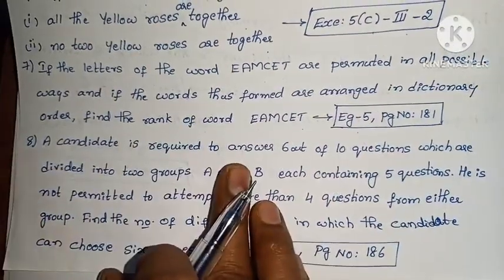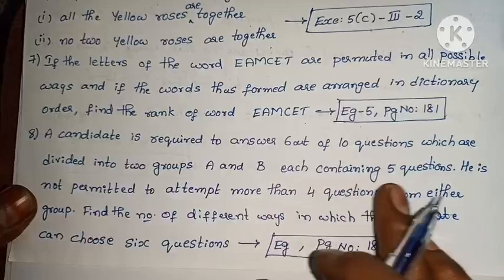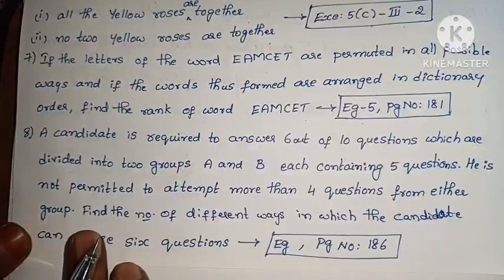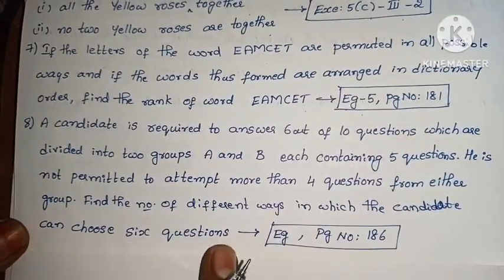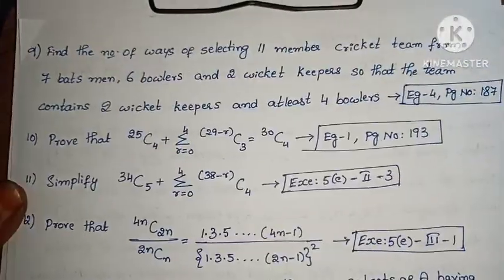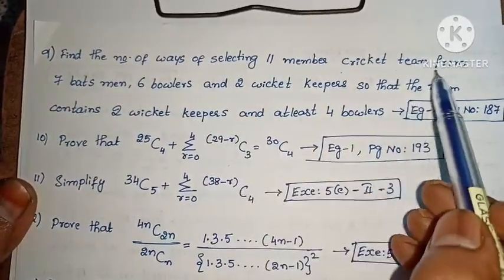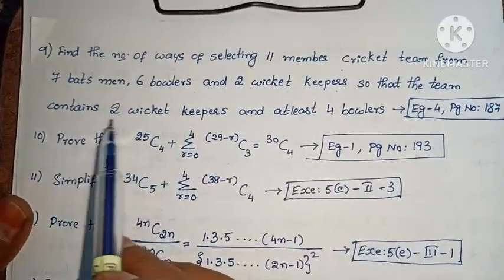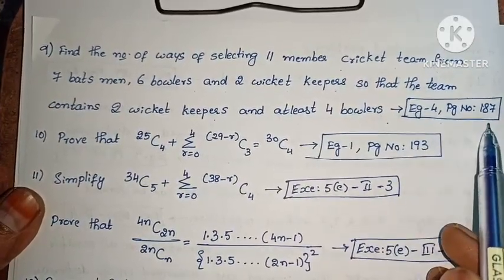Next: a candidate is required to answer 6 out of 10 questions divided into 2 groups A and B, each containing 5 questions. He is not permitted to attempt more than 4 questions from either group. Find the number of different ways in which the candidate can choose 6 questions (Example 1, page 186). Next: find the number of ways of selecting an 11-member cricket team from 7 batsmen, 6 bowlers and 2 wicket keepers, so that the team contains 2 wicket keepers and at least 4 bowlers (Example 4, page 187).